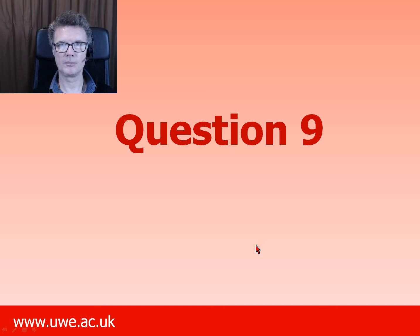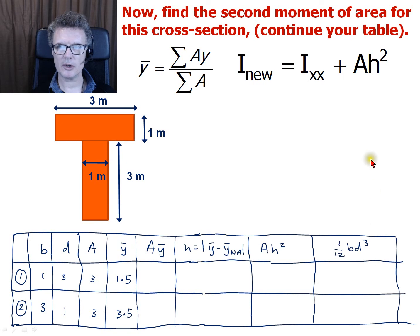Question 9 explains why we did question 8. Question 9 is a follow-on from question 8. We're going to find the second moment of area for this cross-section, and we're going to continue our table.